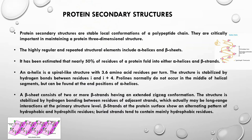Protein secondary structures are stable local conformations of a polypeptide chain and are critically important in maintaining a protein's three-dimensional structure. In bioinformatics, secondary structure prediction is a background step in tertiary structure prediction, because to predict the full protein structure we first need to know where the secondary structures lie. Highly regular structural elements include alpha helices and beta sheets, along with coils and turns. It has been estimated that nearly 50 percent of residues in a protein fold into alpha helices or beta strands.